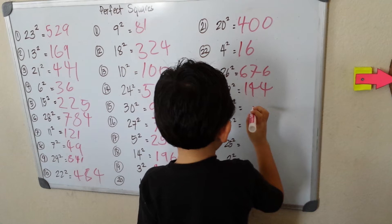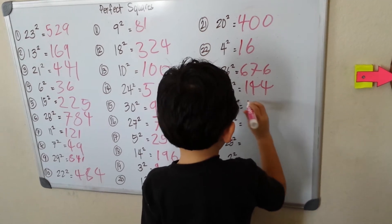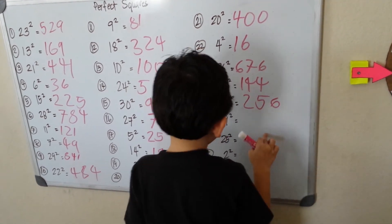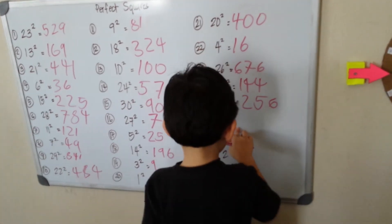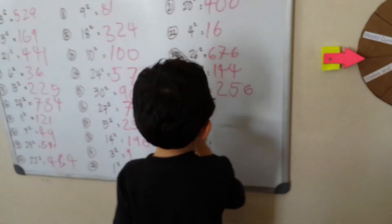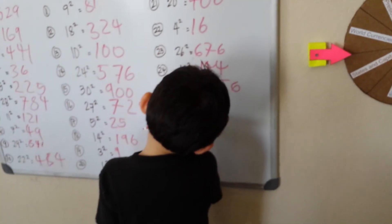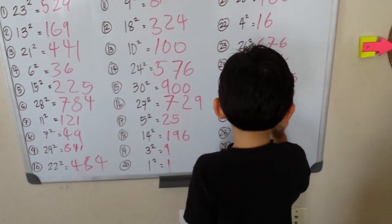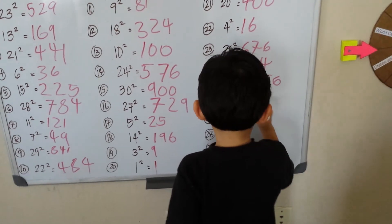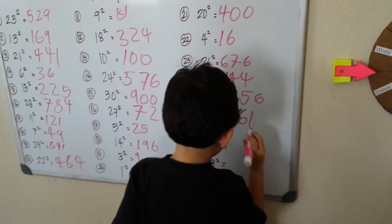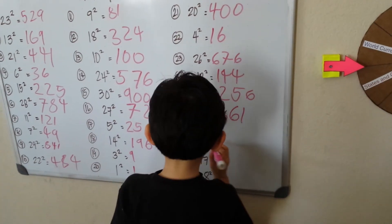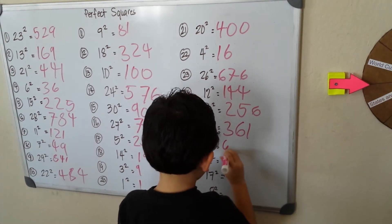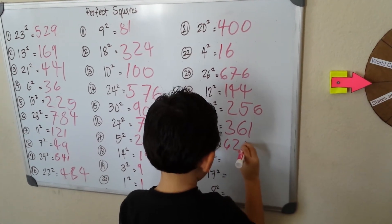16 squared is 256. 19 squared — let me think for a minute — okay, that will be 361. 25 squared is 625.